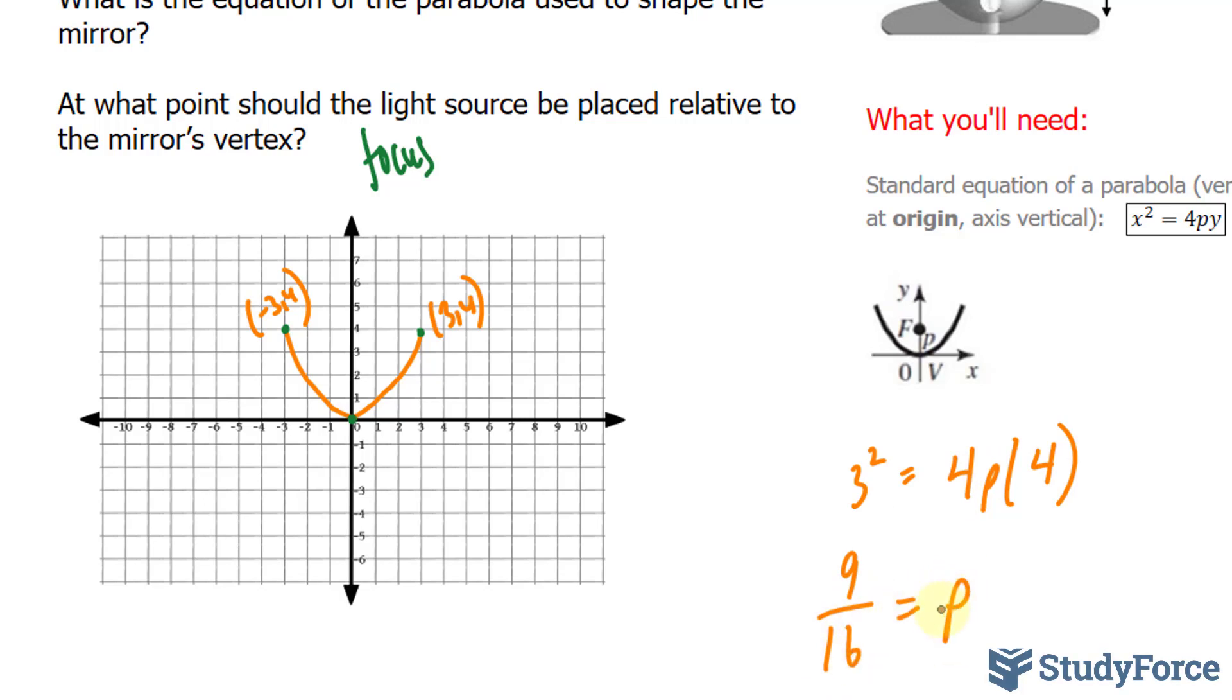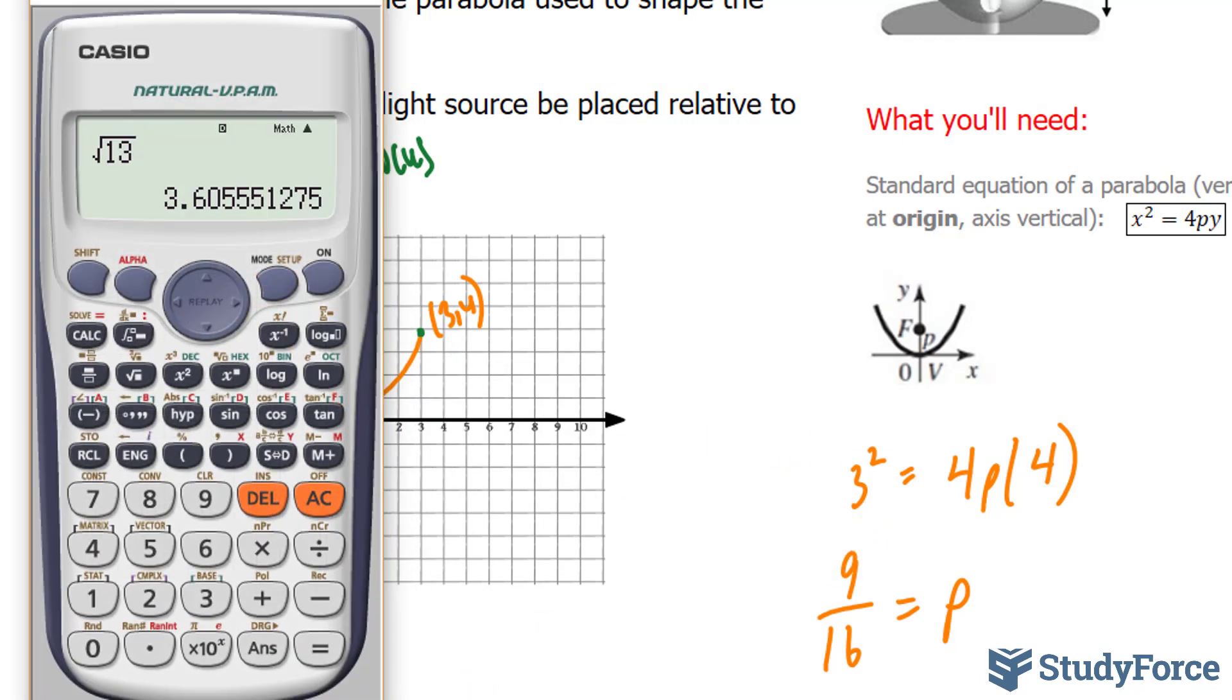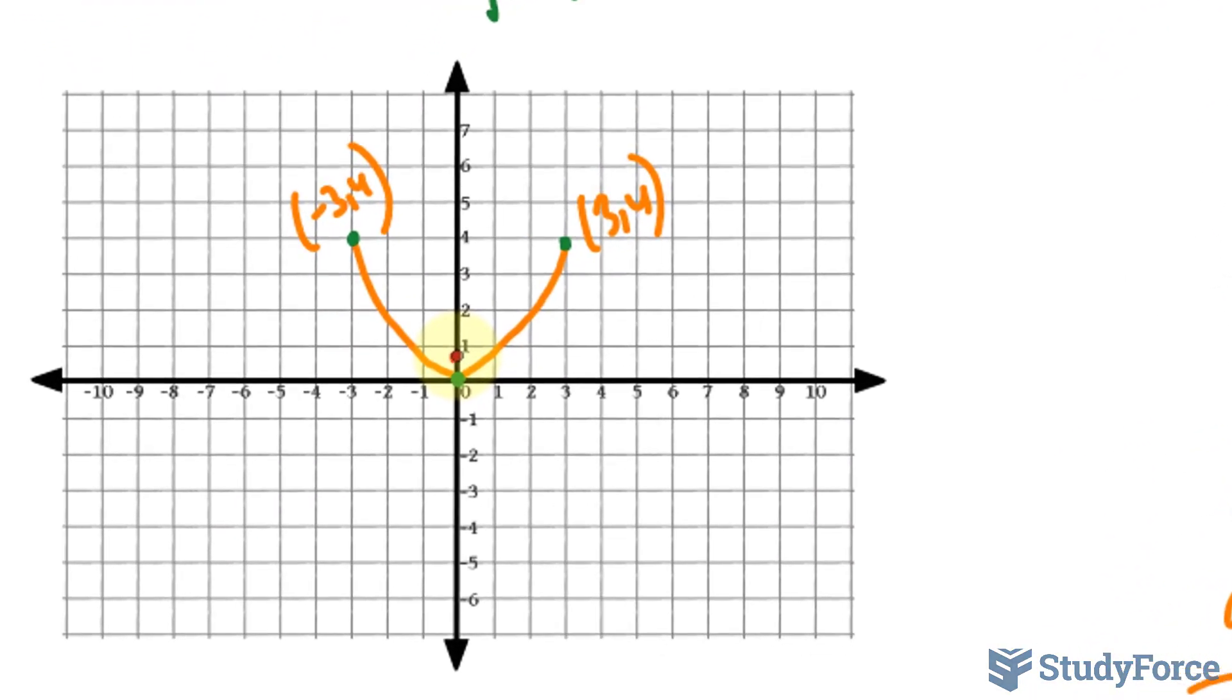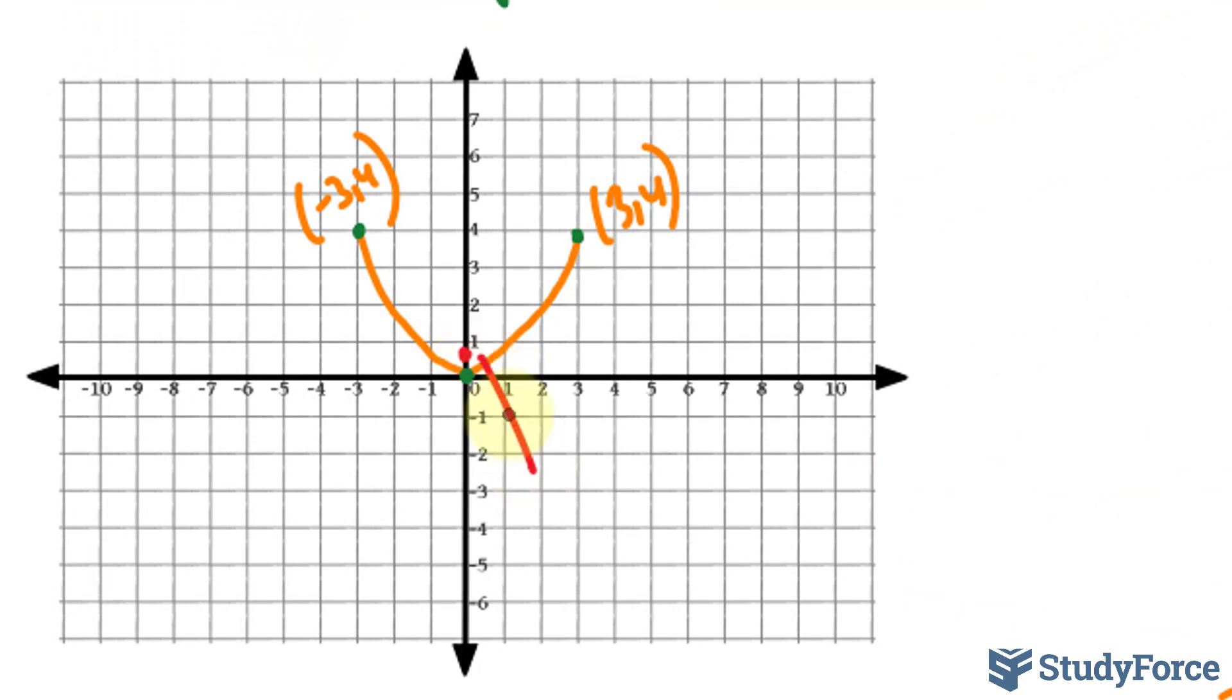Now since this is centered at the origin, this is the y coordinate of the focus and the x coordinate will remain at 0. 9 over 16 is approximately 0.5625. So that's somewhere here and its coordinates will be (0, 9/16).